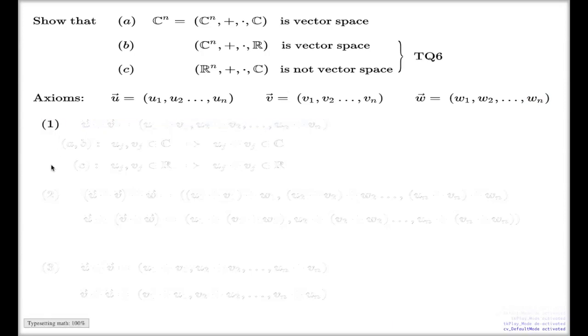So, axiom number one, which we know is a pseudo-axiom, but it's the one which we have to check anyway, says we have to make sure that if I have a sum, then the sum will be the element of my set V as well.